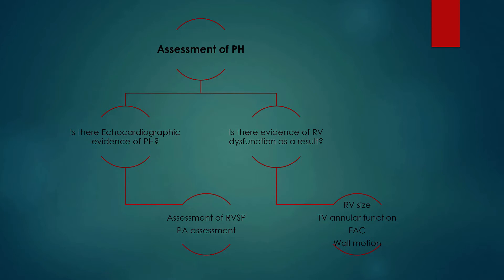We will look at the role of the RV systolic pressure and PA interrogation in determining the likelihood of pulmonary hypertension, and then discuss markers of RV dysfunction. Some of these require advanced echo techniques, but many — particularly the assessment of RV function — can be acquired with standard basic cardiac views. It's important to note that this is not meant to replace comprehensive echocardiography performed by cardiologists. Rather, these are tools we can use at the bedside in critical care to assess the rapidly evolving clinical realities of our patients and the impact of our interventions on their hemodynamics.